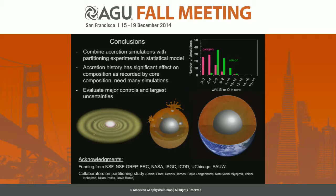Question: You showed that the depth of the equilibration pressure has an impact on your results. What was the reason for choosing 60% of the core-mantle boundary? Response: It's a nice round number, similar to results that previous studies have found, like Rubie et al. 2011. We haven't done any fine-tuning to find the best-fitting conditions, but it's one that gives us plausible compositions in terms of both the mantle and core composition.